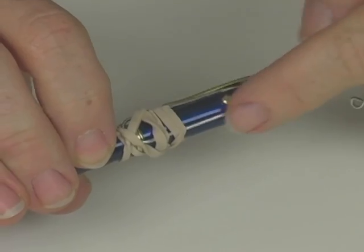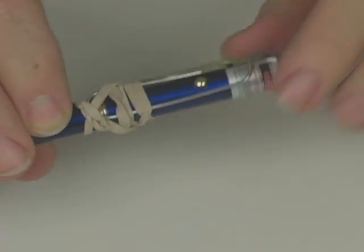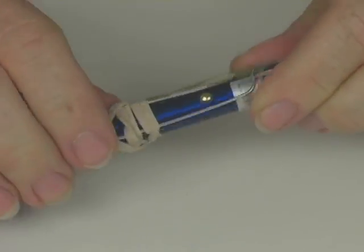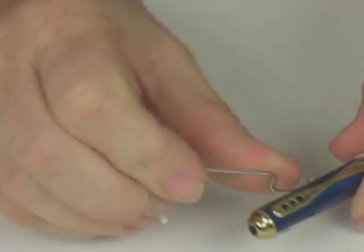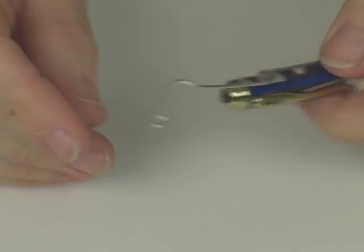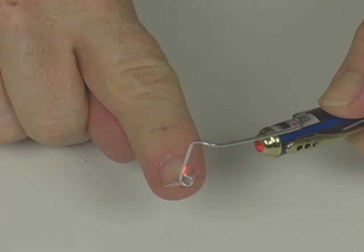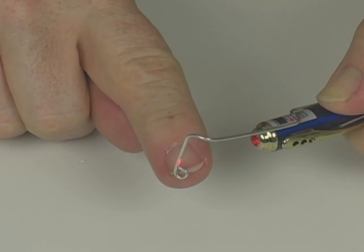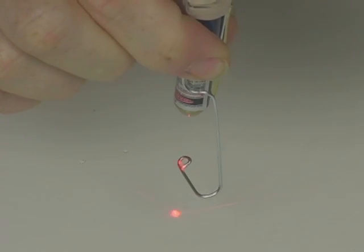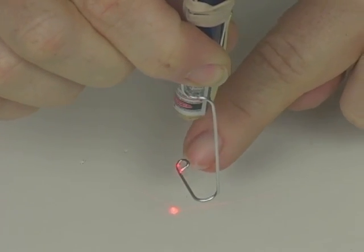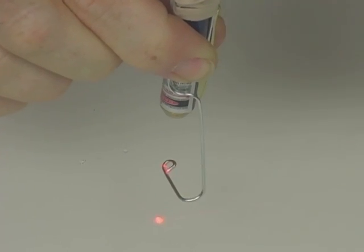Now attach the wire to your laser using the rubber band. Just wrap it around several times with the wire underneath. Then bend the wire so that when you turn the laser on, the beam goes right through the loop you made. I'll show you here. Now the beam goes right through the loop and onto the table.